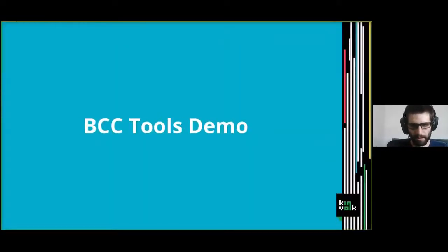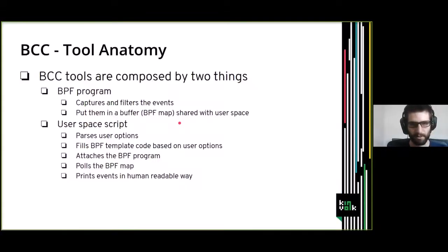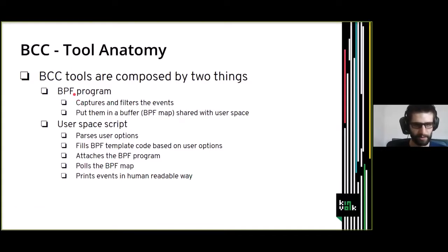As you can see, there are many different tools available in BCC. You can go to the repo and find a tool for the task you need. But it can happen that you need to do something special not implemented in those tools — you might need to customize an existing tool. Let me show you how to modify an existing BCC tool. BCC tools are composed of two parts: the BPF program that runs in the kernel and captures/filters events, and the user space script.